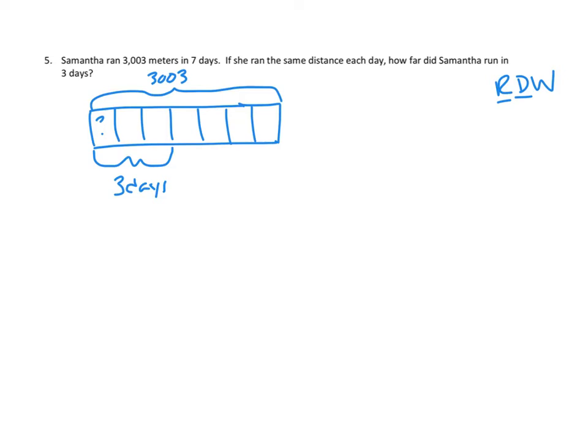I'm going to set this up with our standard division algorithm. So I'm going to say we have 3,003, and we're dividing that in seven pieces. So as I go through my division, I always start with my largest units. And I say, could I divide 3,000s by seven into seven parts? And I can't do that.